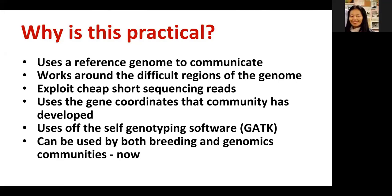We call this 'practical' because we use a reference genome as a communication system to address and load all the variants available in a species. We need some baseline, and that's why we use the reference genome. The Practical Haplotype Graph also works around difficult regions of the genome and exploits cheap sequencing rates. Users of standard genotyping software like GATK can use it for both breeding and genomics purposes.